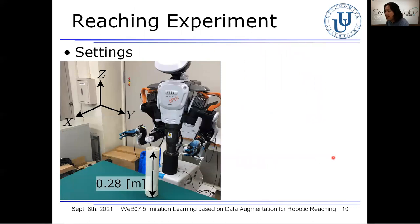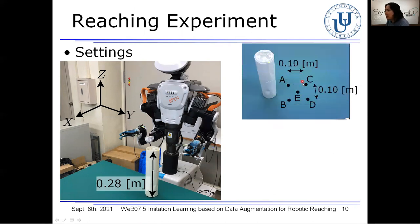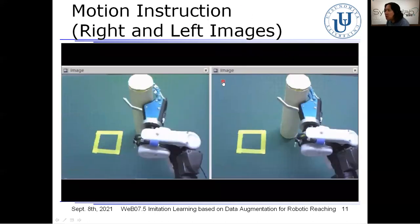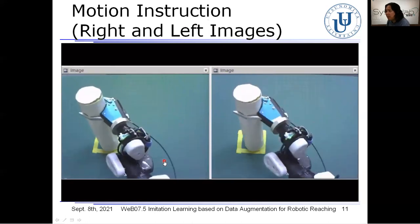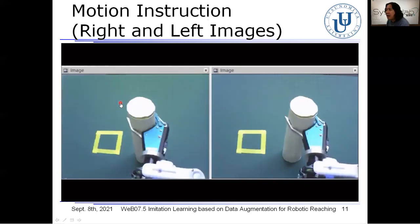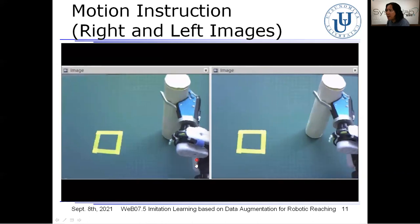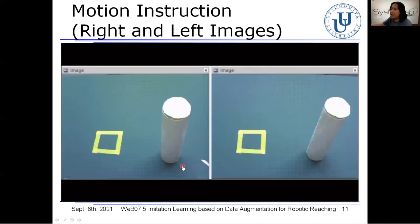In this experiment, we imposed reaching tasks toward an object in front of the robot, using only the right hand. In the instruction phase, the object was placed at five positions: A, B, C, D, and E as the known positions. In the motion planning phase, the object was placed at four additional positions: F, G, H, and I as the unknown positions, in addition to these known positions. These movies show the reaching hand from the robot's view to the object placed at the known positions during the instruction phase. We focus only on the reaching motion from the initial position toward the target object.